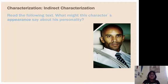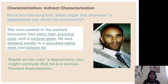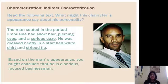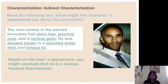Let's read a text. What might this character's appearance say about his personality? 'The man seated in the parked limousine had short hair, piercing eyes, and a serious gaze. He was dressed neatly in a starched white shirt and striped tie.' Based on the man's appearance, you might conclude that he is a serious, focused businessman. Notice that even though the author told you directly what he looks like, it's actually indirect characterization because describing the appearance made you have to do some detective work to figure out what the character's personality was like.